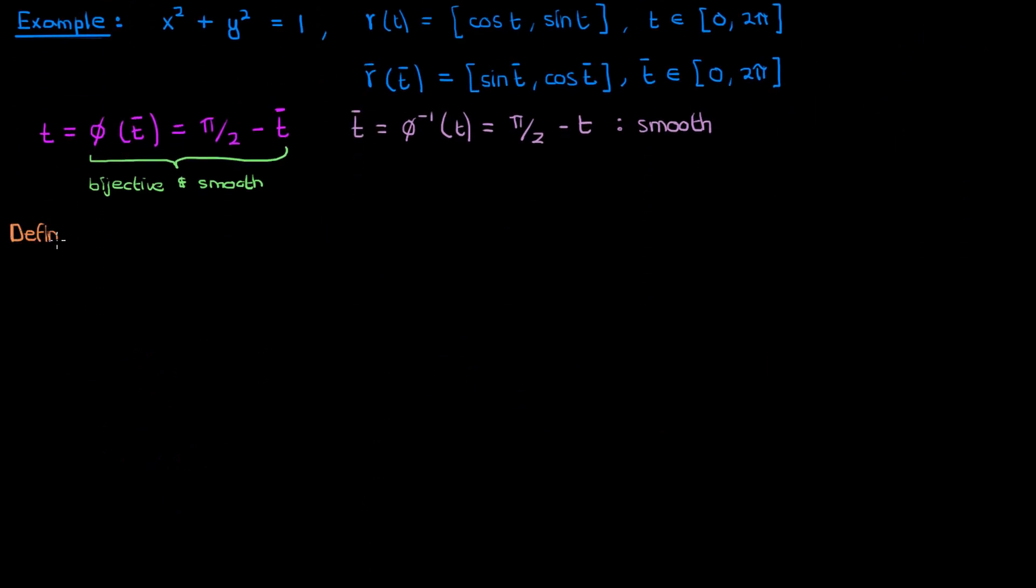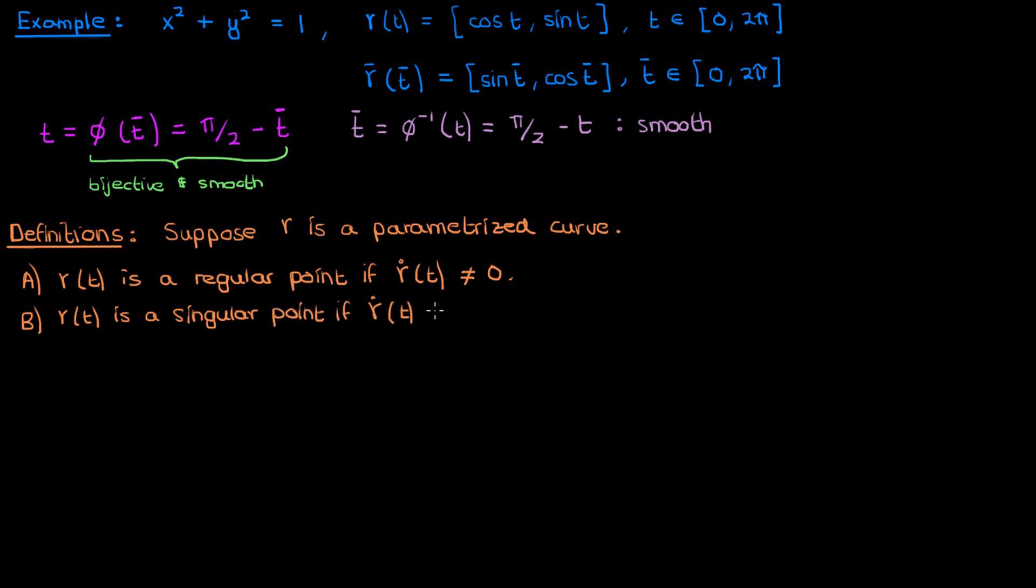Let's move to our final definitions in this video of regular and singular. Again we'll have γ be our parametrized curve. Now, a regular point of γ is one where the derivative of γ is not zero. A singular point is one where the derivative is zero, so the velocity at that point is zero. Finally, the entire curve γ is called a regular curve if all of its points are regular. So that should cover our quick definitions.